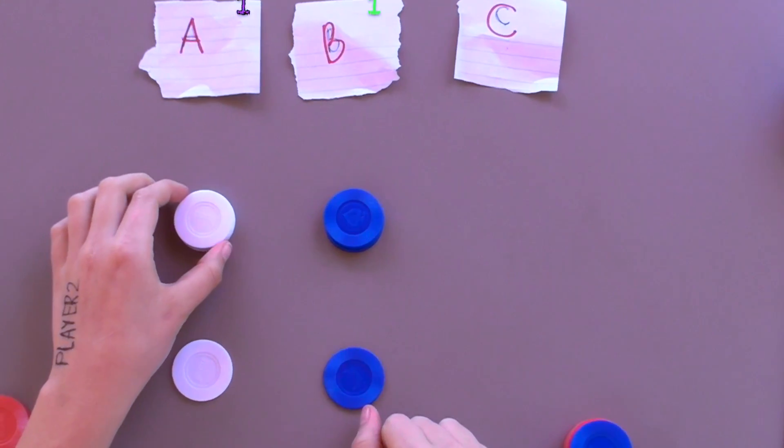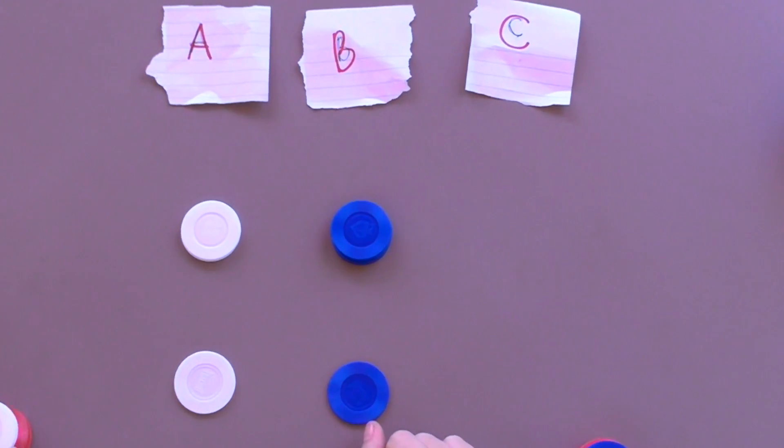Now we are left with two piles of the same size. There's no chance I can lose. Why? Because from then on out, all I have to do is mirror her every move.